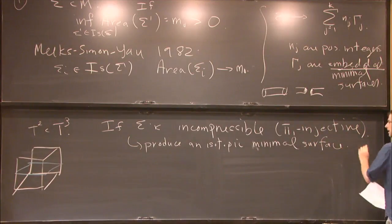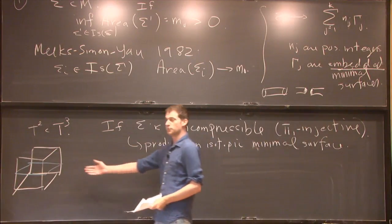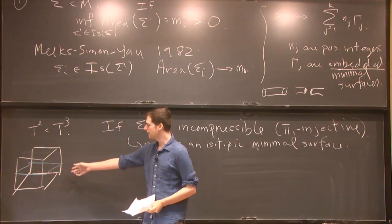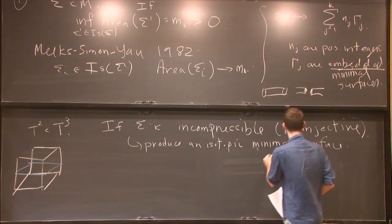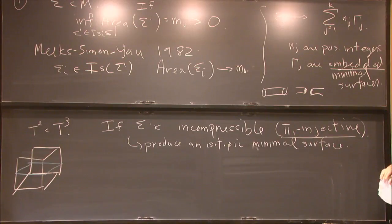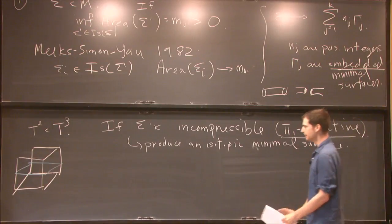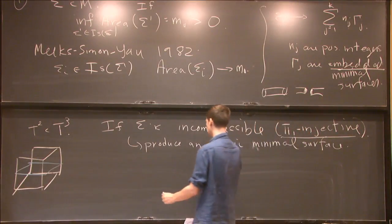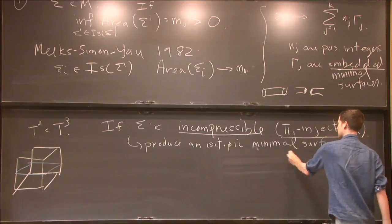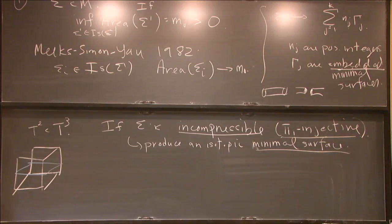An example of an incompressible surface is the two-torus in the three-torus. What π₁-injective really means is that any neck you pinch would only split off a sphere. So there's a natural correspondence between incompressible surfaces and minimal surfaces coming from area minimization.